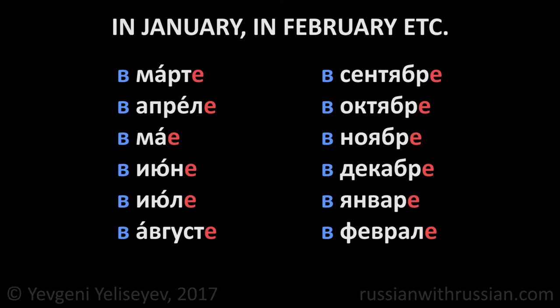The names of autumn and winter months are stressed on the ending. В сентябре – in September, в октябре – in October, в ноябре, в декабре, в январе, в феврале.